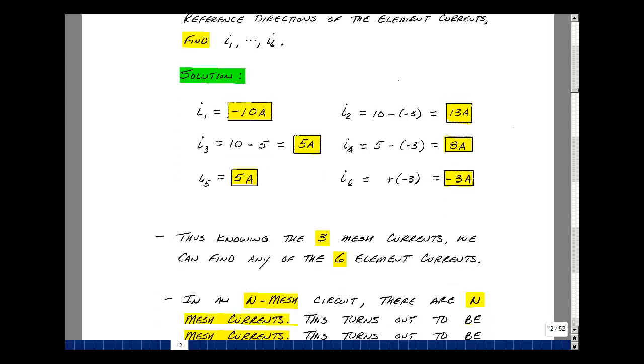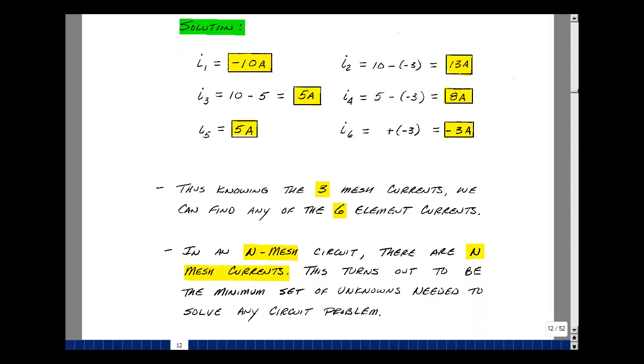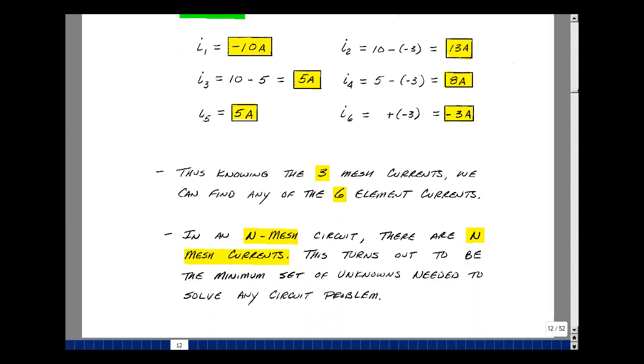Now just like the node voltages, we can talk about the minimum number of unknowns. So in this example, if I knew the three mesh currents, i_a, i_b, and i_c, I could find the currents in six elements. I don't need to write six equations, just need to have three equations and three unknowns to solve for that. In an n mesh circuit, there are n meshes. In this last example, if we knew the three mesh currents, we could find the current in the individual elements. They were either the same current, the opposite sign, or a difference of two.